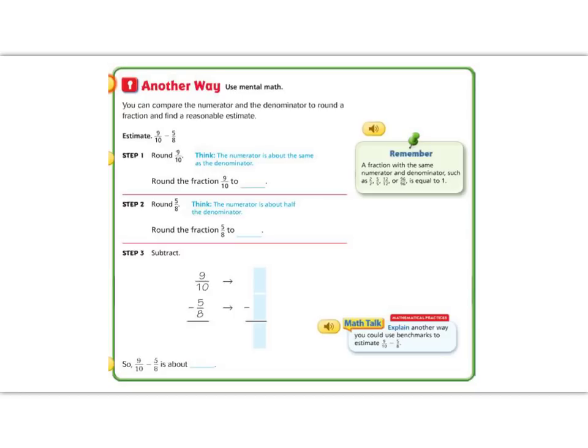Let's try estimating sums and differences another way — this time we're going to use mental math. You can compare the numerator and the denominator to round a fraction to find a reasonable estimate. In this one, we're going to be estimating 9/10 minus 5/8. The first step is to round 9/10. If I had 10/10, that would be a whole number, and 9/10 is pretty close to 10/10, so I'm going to round this to 1.